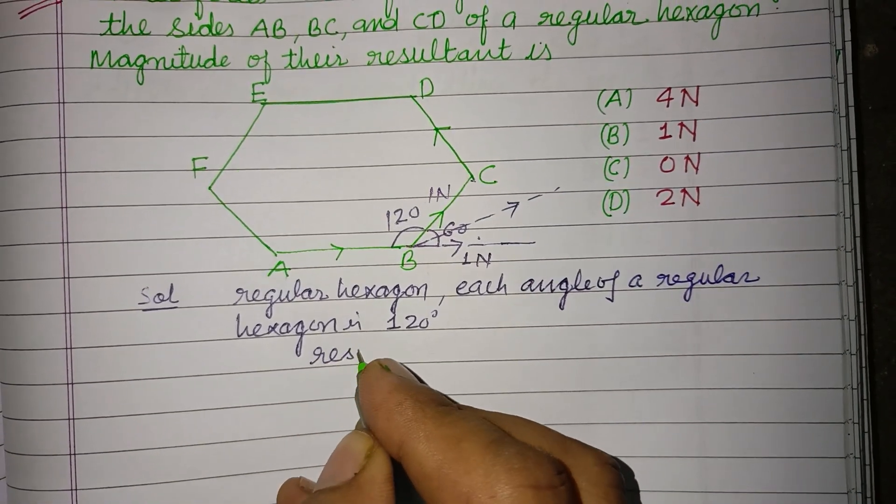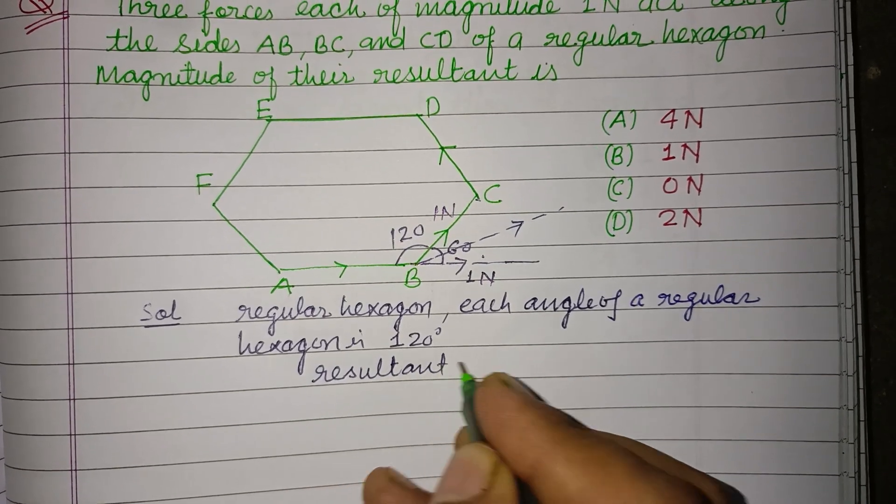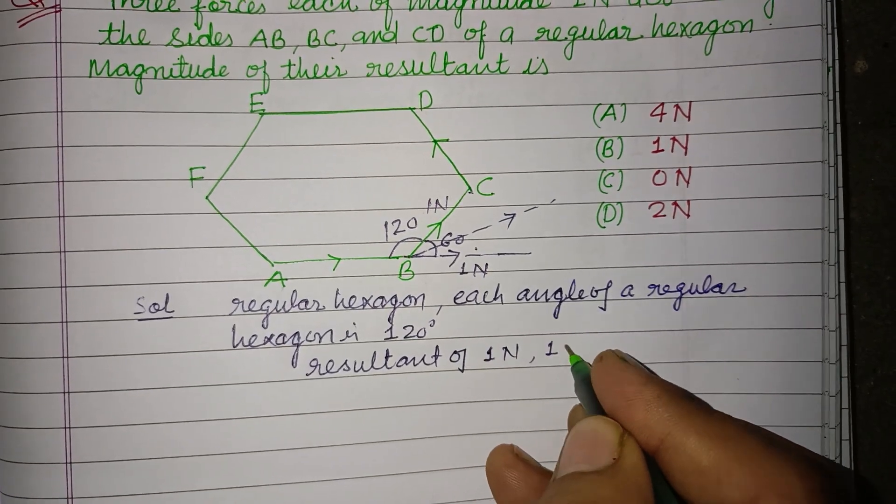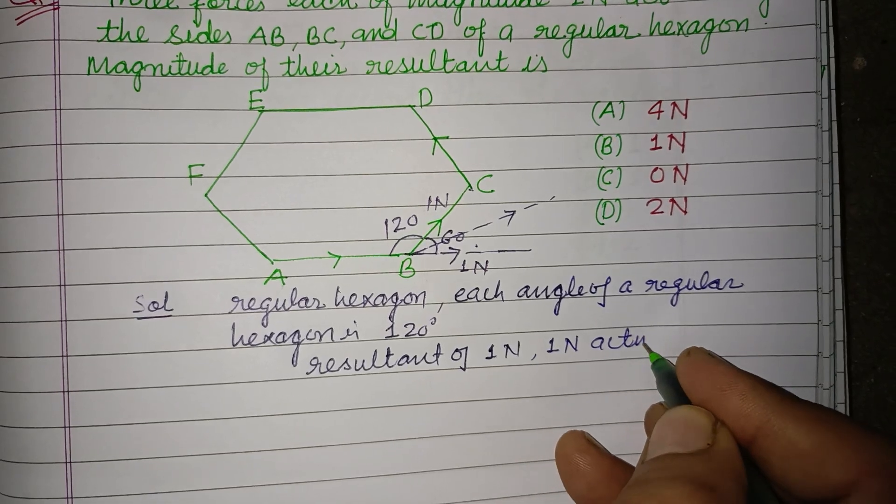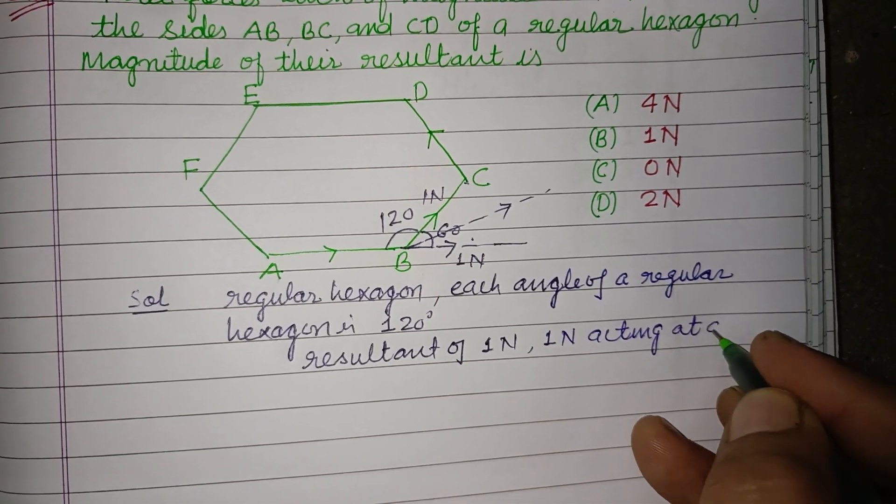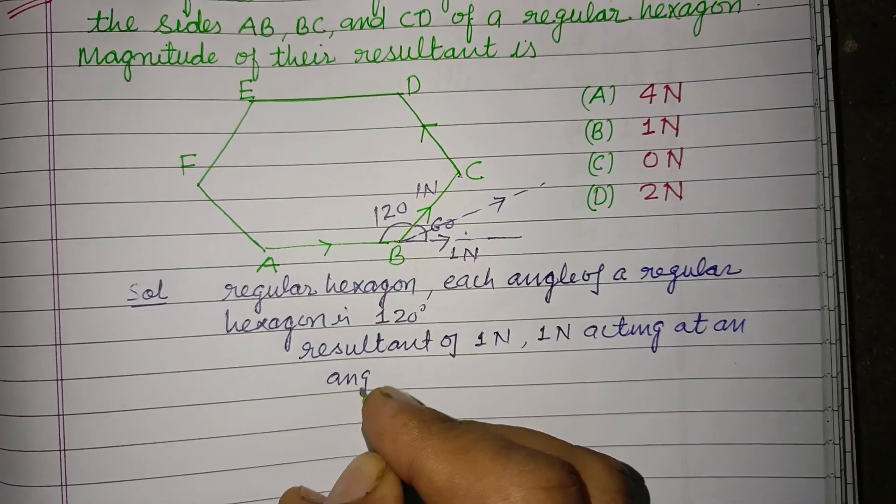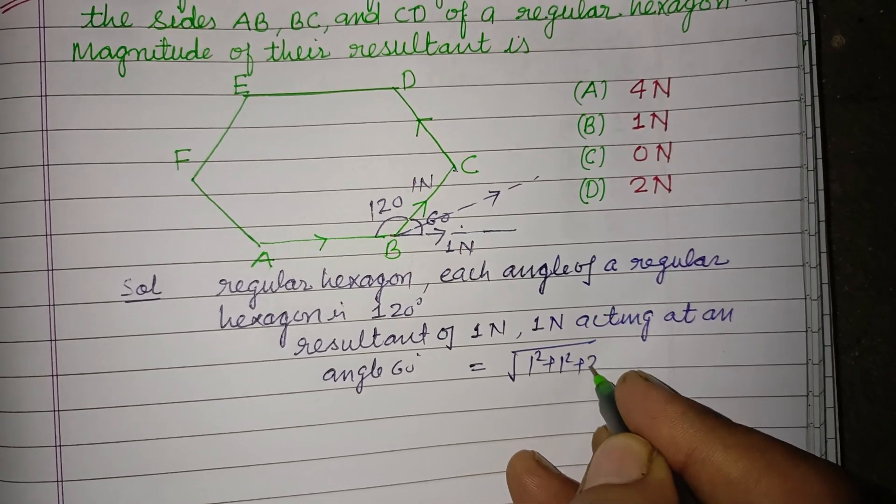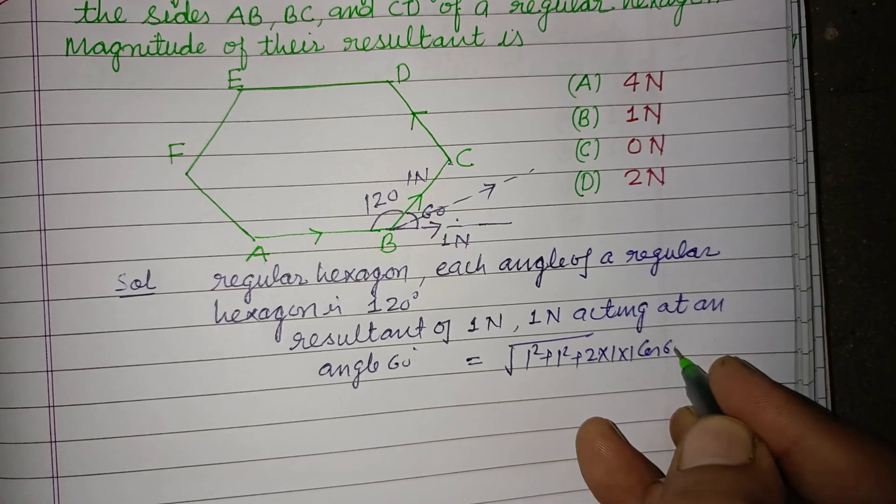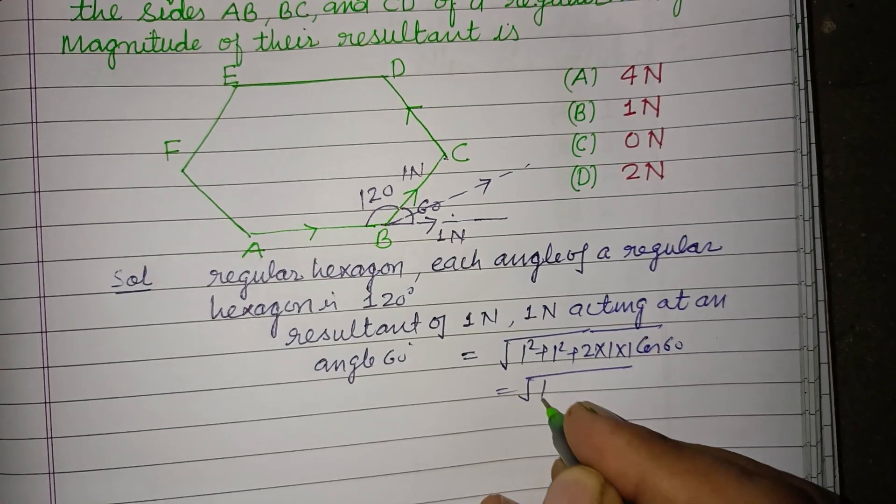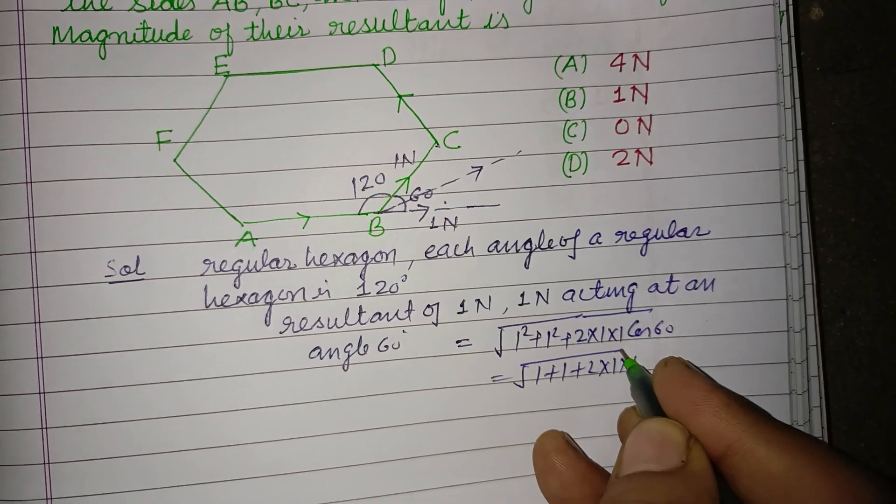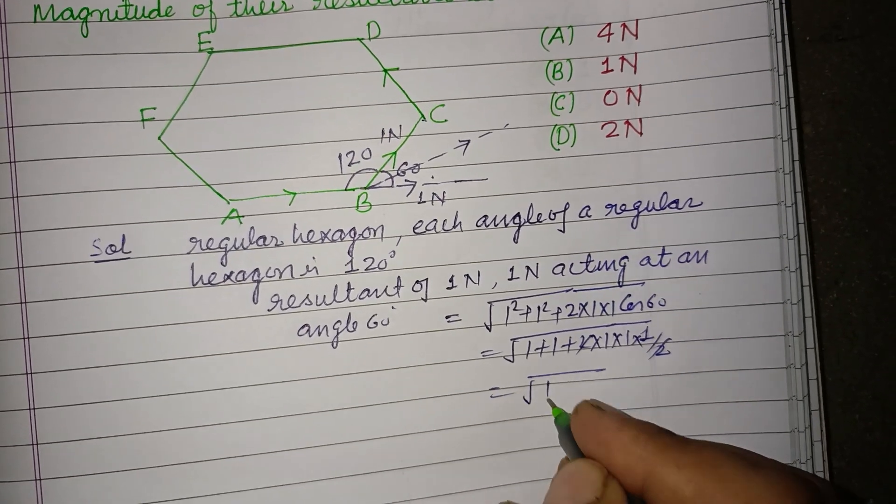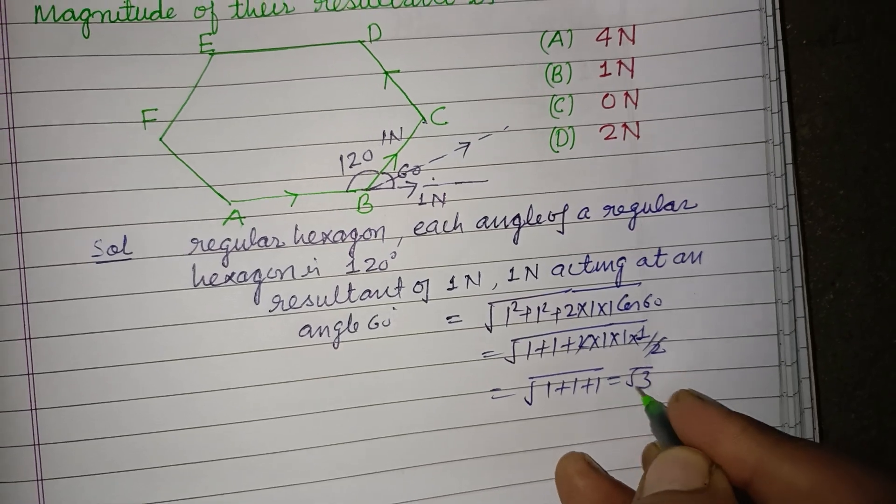So resultant of 1 N and 1 N acting at an angle 60 is equal to 1 square plus 1 square plus 2 times 1 into 1 cos 60, and this will be 1 plus 1 plus 2 into 1 into 1 cos 60 is 1 by 2. So 2 divided by 2, 1 times, this is 1 plus 1 plus 1 that is root 3.